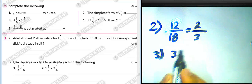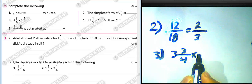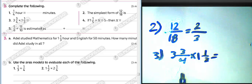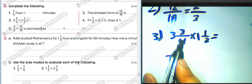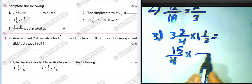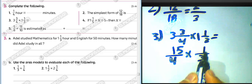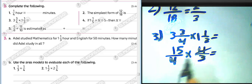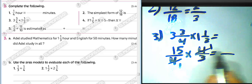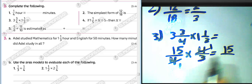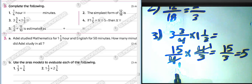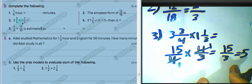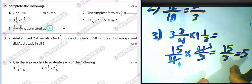Question number three: three and three over four multiplied by one and one over three. Convert to improper fractions: three times four equals twelve, twelve plus three equals fifteen over four. One times three equals three, plus one equals four over three. Then simplify: fifteen over four times four over three — cancel the fours, one times fifteen equals fifteen, fifteen divided by three equals five. The result is five.